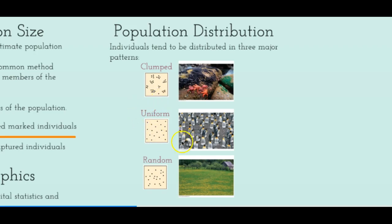The second type of population distribution is uniform distribution. Uniform distribution maximizes space between individuals due to competition for resources. For example, penguins space out quite nicely because they defend their territories against neighbors — they want personal space to raise their young. Another example is salvia leucophylla, a flower that releases chemicals into the surrounding soil, preventing other organisms and individuals of the same species from growing too close, allowing them to access the resources they need. Uniform distribution is less common than clumped.